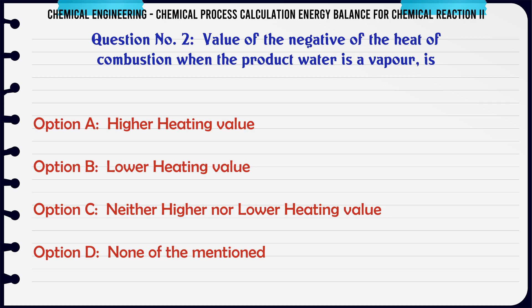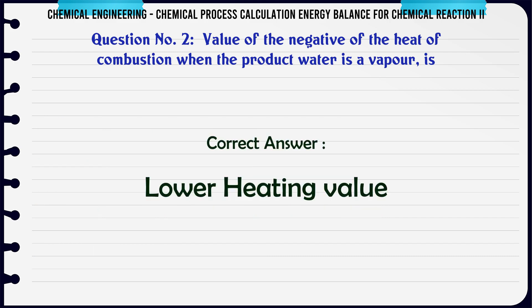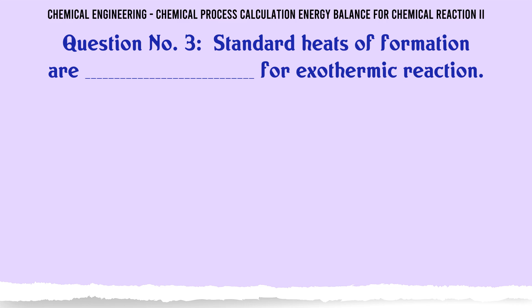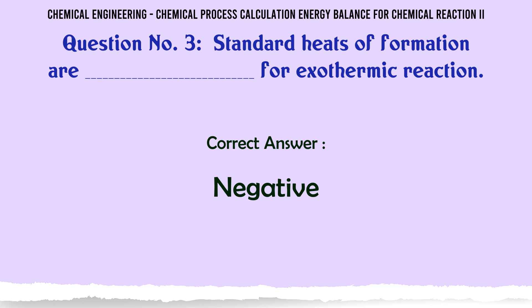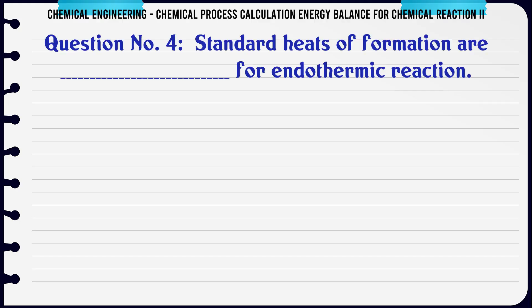The value of the negative of the heat of combustion when the product water is a vapor is: a) higher heating value, b) lower heating value, c) neither higher nor lower heating value, d) none of the mentioned. The correct answer is lower heating value. Standard heats of formation for an exothermic reaction are: a) negative, b) positive, c) zero, d) none of the mentioned. The correct answer is negative.